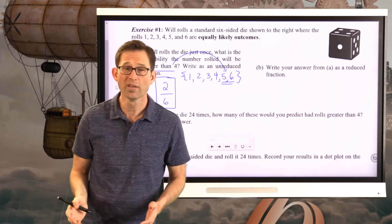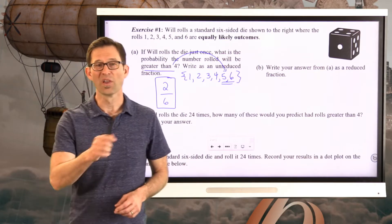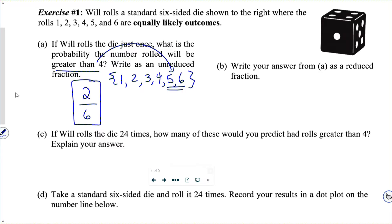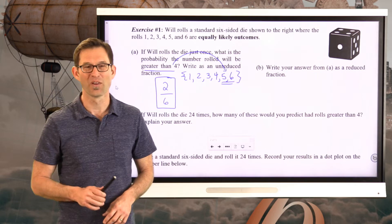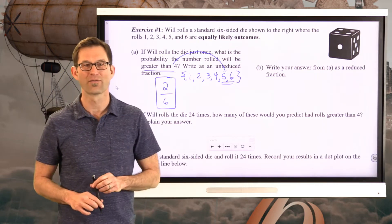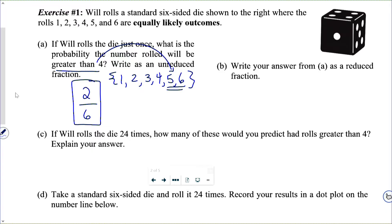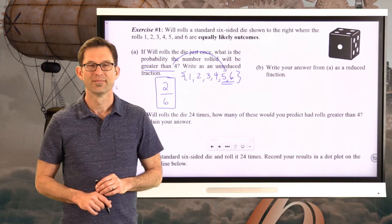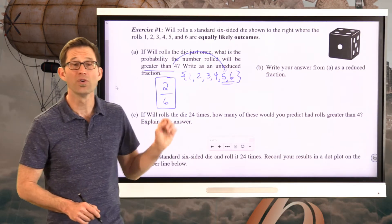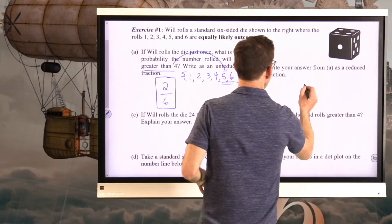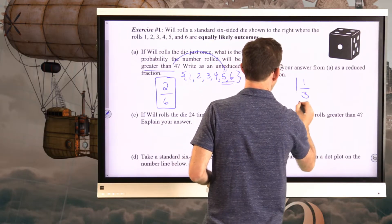Now letter B: Write your answer from A as a reduced fraction. Pause the video for a moment and reduce that fraction. I could divide both numerator and denominator by two and I get a reduced fraction of 1/3.